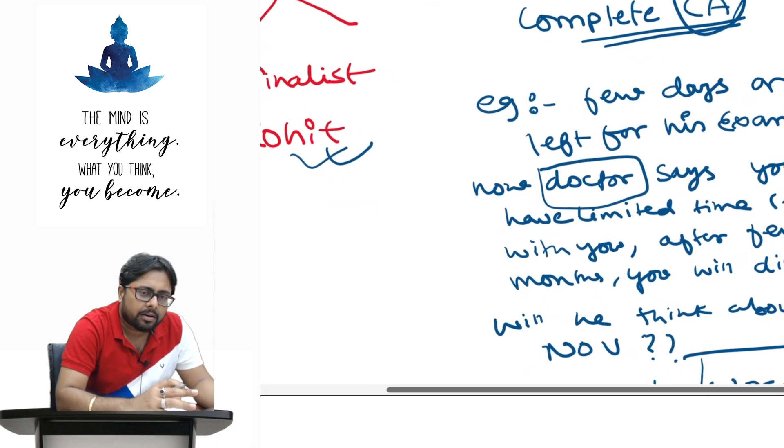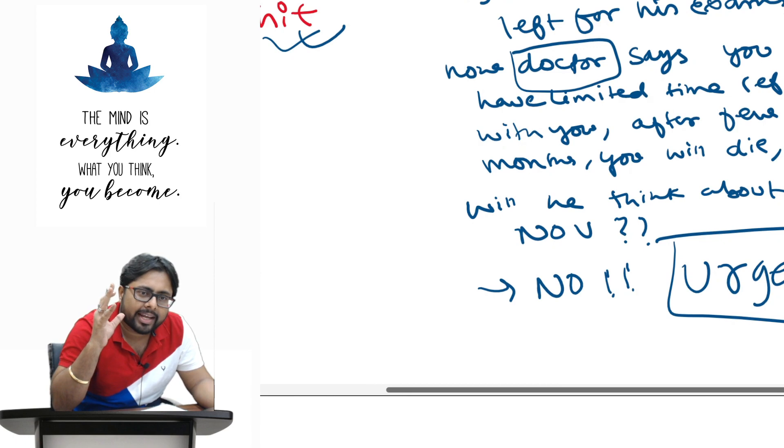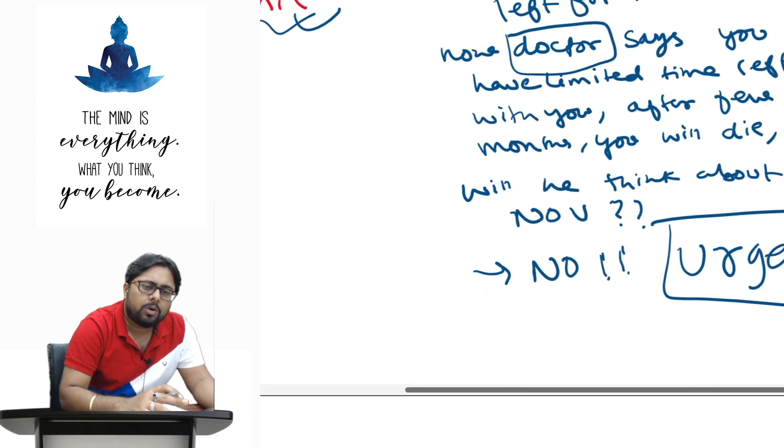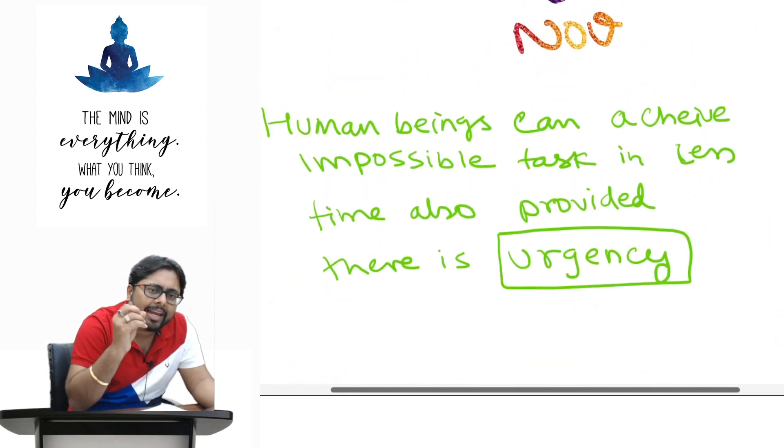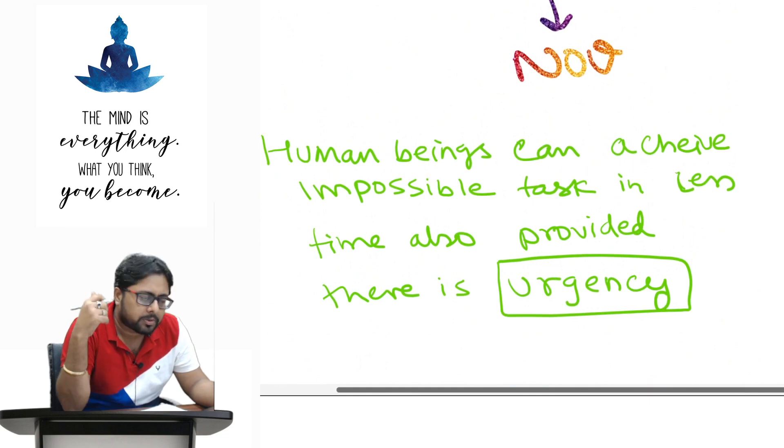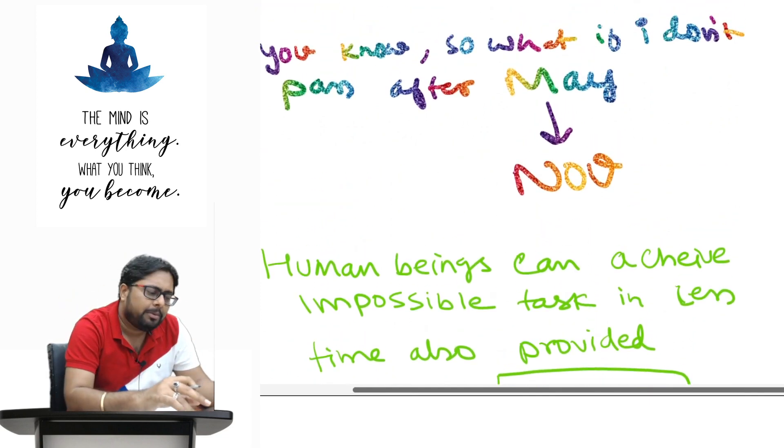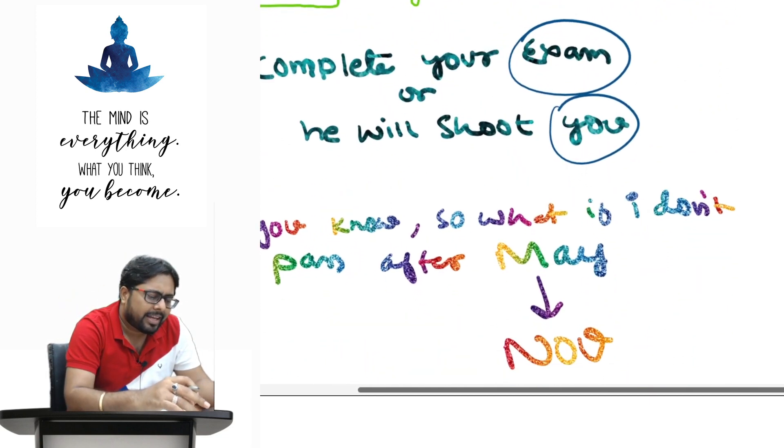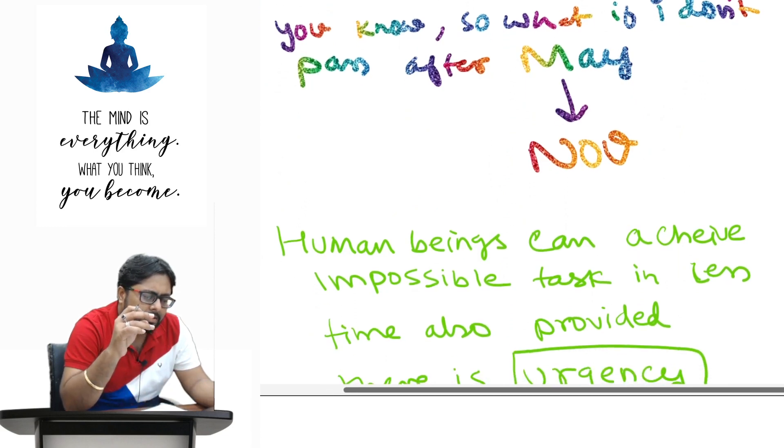Are you getting me? So, and the most important thing in his life was to complete the degree, he is a CA finalist, was to complete CA. So, tell me honestly, will that person even think that after May, he's got option left November? Tell me honestly.